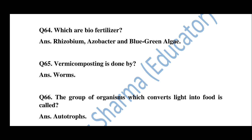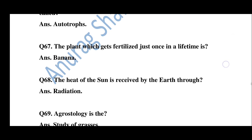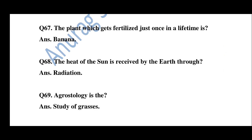Question number 65: How is vermicomposting done? By worms. Question number 66: The group of organisms which converts light into food is called — the answer is autotrophs. Question number 67: The plant which gets fertilized just once in a lifetime is — the answer is the banana tree.